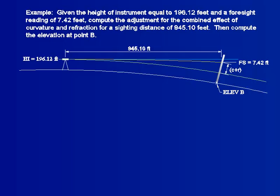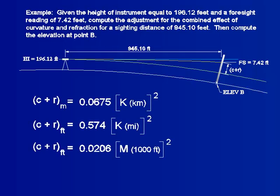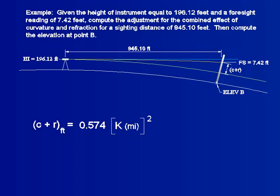Then compute the elevation at point B. There are three curvature refraction equations to choose from. Let's use the one we derived earlier, which measures the sighting distance in miles. Applying the conversion factor and substituting the sighting distance for k. The curvature refraction correction is 0.0184 feet.